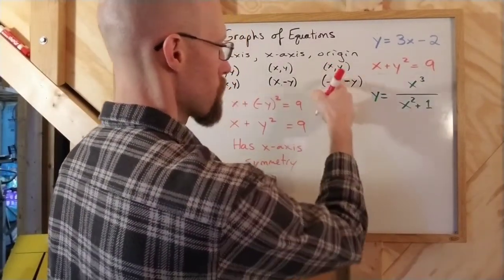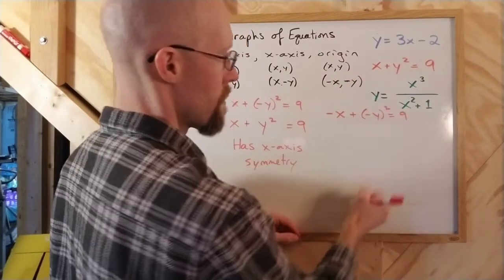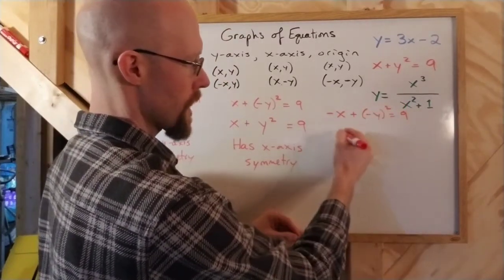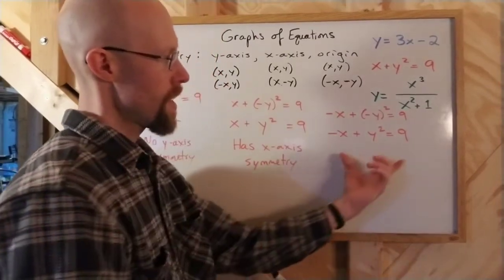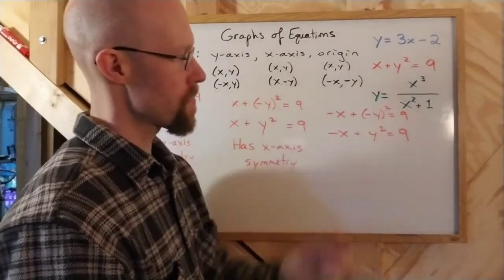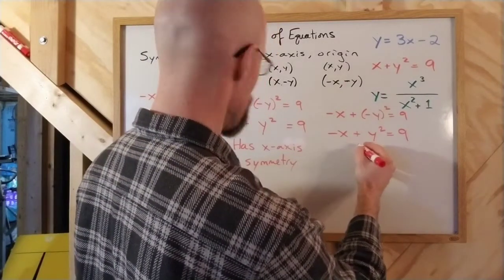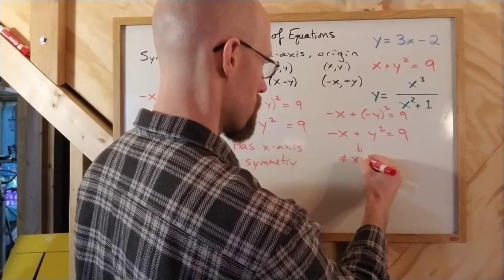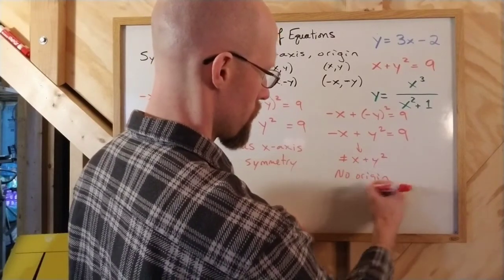So replace x with negative x. Replace y with negative y. Now, the negative on the y disappears because of the square, but the negative on the x does not. And this equation differs from the original in the sign on the x variable, which makes the equation different. So this is not equal to x plus y squared. And so there's no origin symmetry.